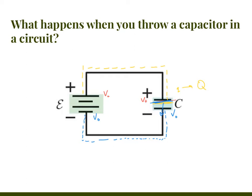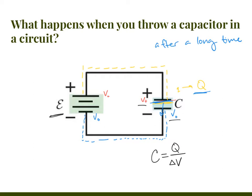Capacitors don't start off with the maximum amount of charge — it takes some time to get there. We're going to look at that in RC circuits on another day. For today, we're going to consider capacitors after a long time, which is whenever the capacitor gets fully charged to its maximum charge. The maximum charge is based on the capacitance of the capacitor. Capacitance equals total charge on one plate divided by delta V across it. Here, delta V is the same as the EMF.